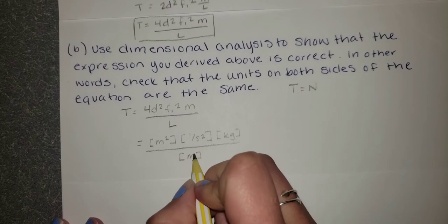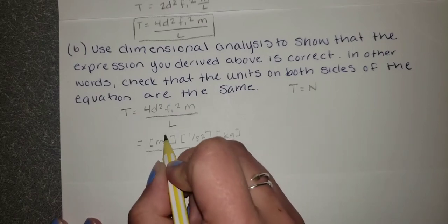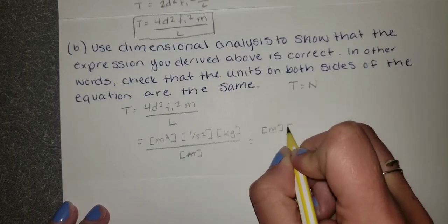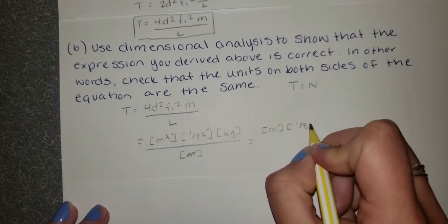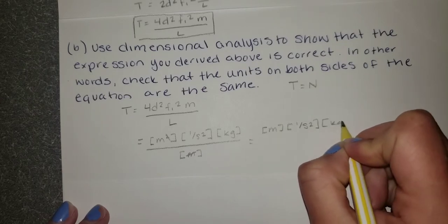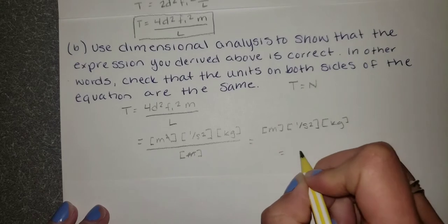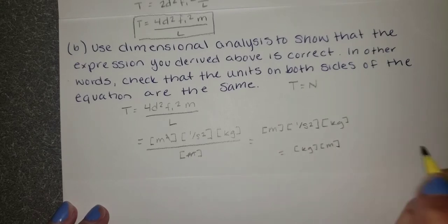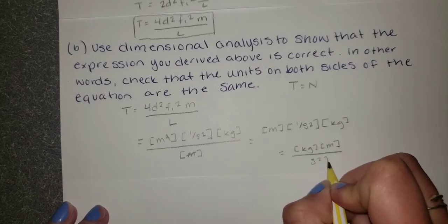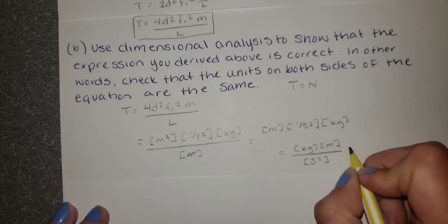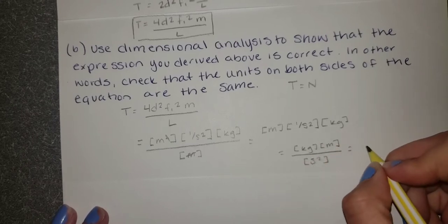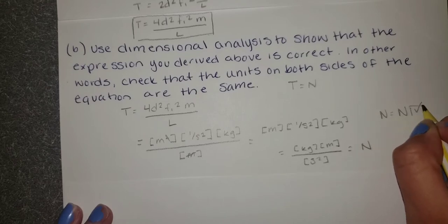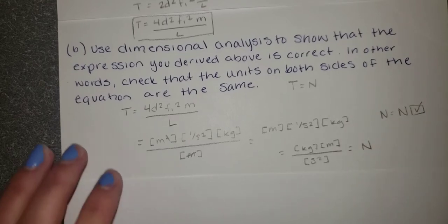So if we just simplify this a little bit, we can cancel out this meters from the bottom and this squared from the top, leaving us with meters times one over second squared times kilograms. Or if we write it a slightly different way, we're going to see that kilograms times meters over second squared. And if we recall, this function is equal to newtons. So newtons equals newtons. So we can check off that both sides of the equation.